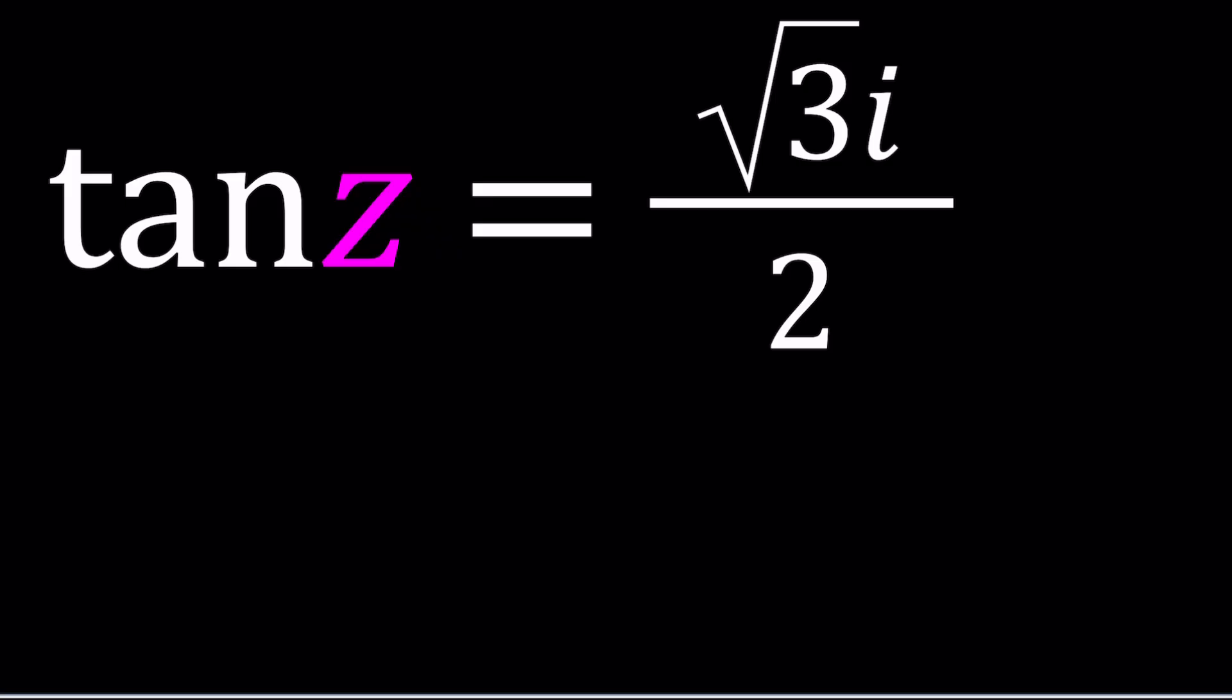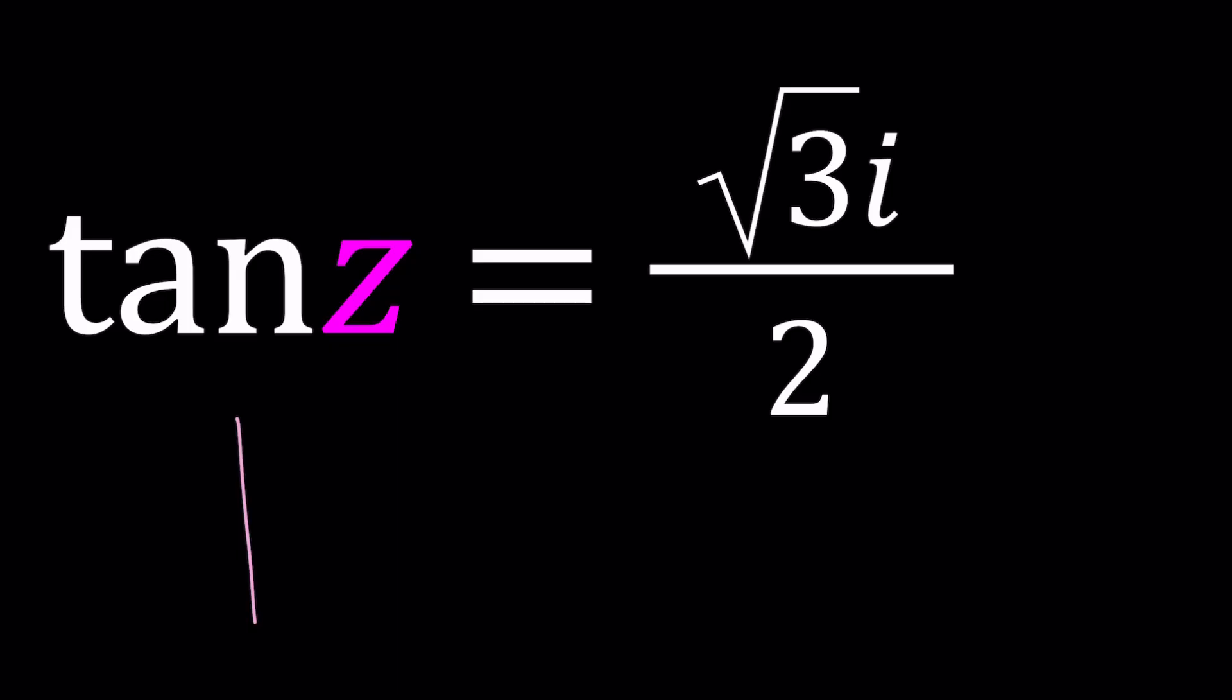We could start by drawing a right triangle. Even though it's not going to make much sense, it is going to work. Let's suppose we have a right triangle like this and this is our angle z, which is imaginary. You're just imagining it, you're not supposed to see it. Tangent z is equal to root 3i over 2. I can assume that this side measures root 3i and this side measures 2. It doesn't really matter. The ratio matters because everything changes accordingly.